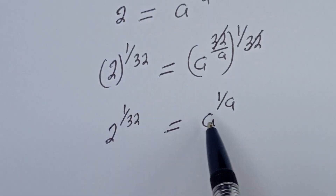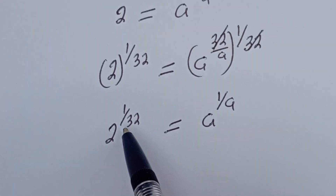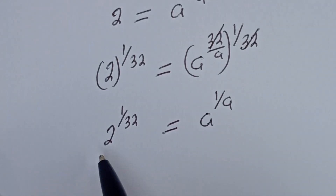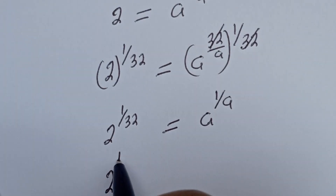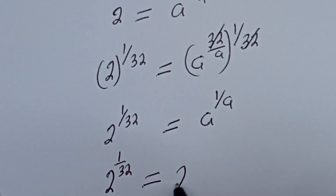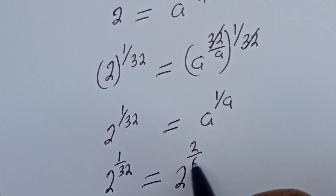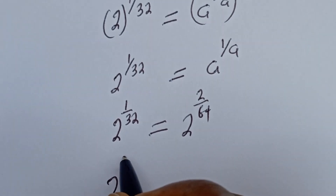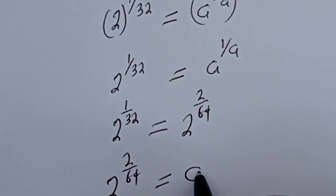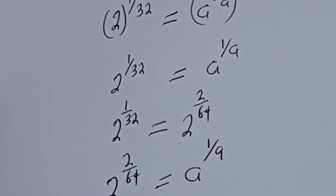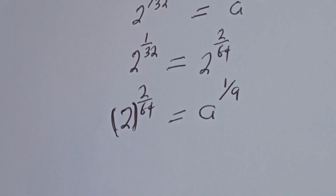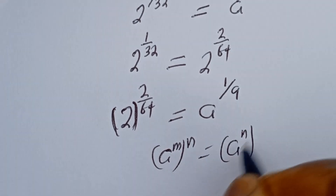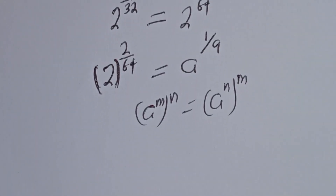We can see that on the left we have 2 to the power of 1 over 32, and on the right we have a to the power of 1 over a. We need to perform a trick to get our answer. Note that 2 to the power of 1 over 32 can be written as 2 to the power of 2 over 64, which is the same thing. Using the rule that m to the power of n equals n to the power of m in this form, this can be written as 2 squared to the power of 1 over 64.